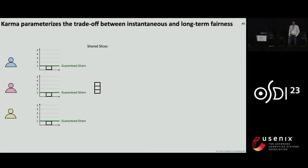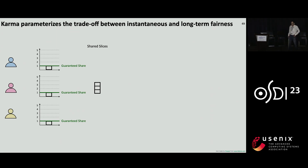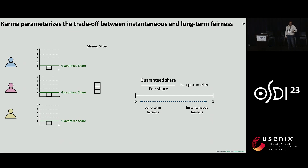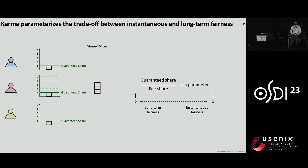To complete the picture: the guaranteed share fraction is a parameter for the algorithm, and it exposes the tradeoff between long-term fairness and instantaneous fairness. When the guaranteed share equals the fair share, you get instantaneous fairness. As you reduce the guaranteed share, you get better and better long-term fairness. More details are discussed in the paper.